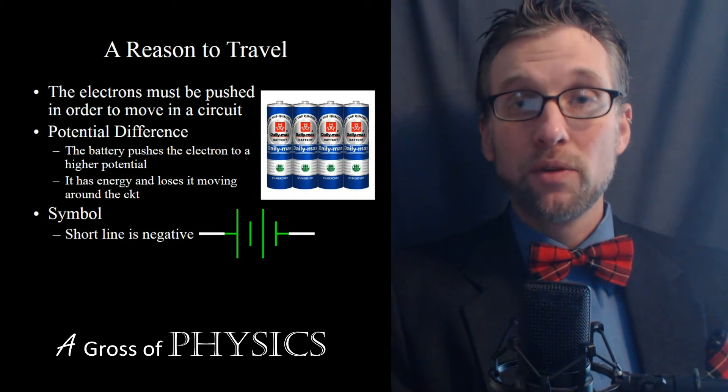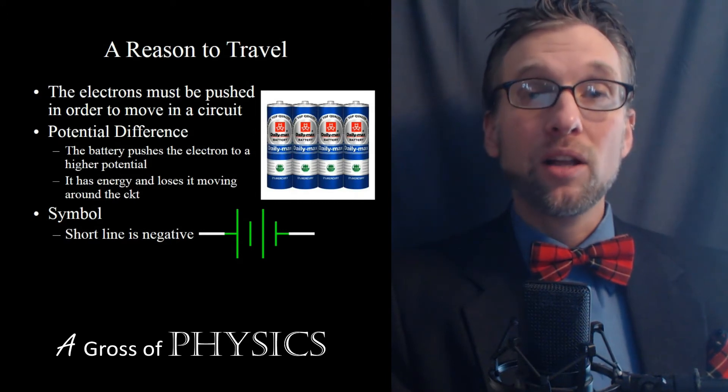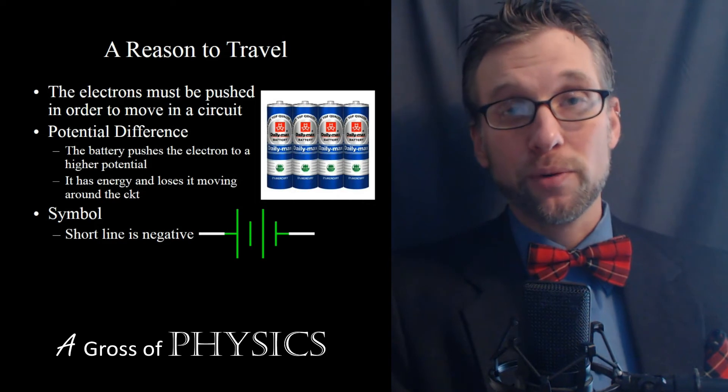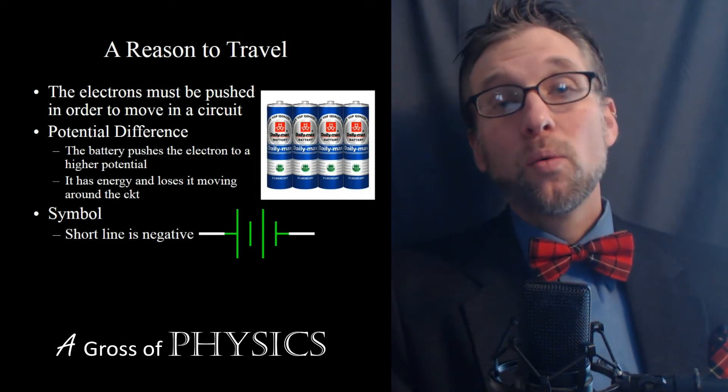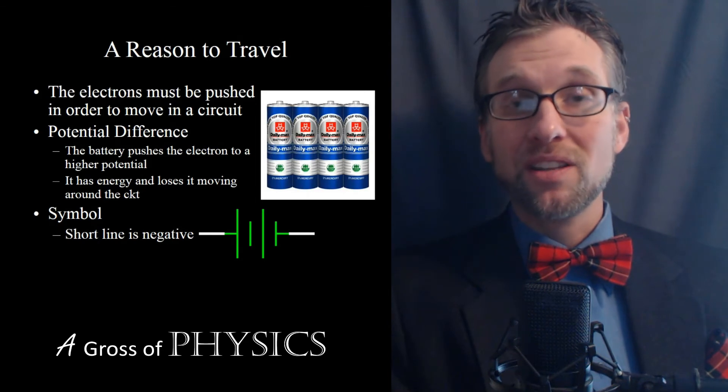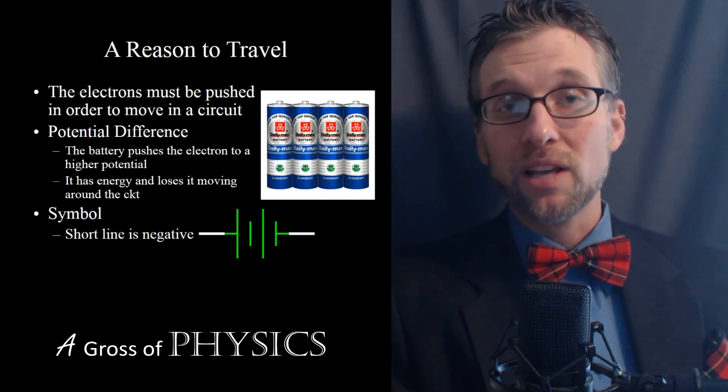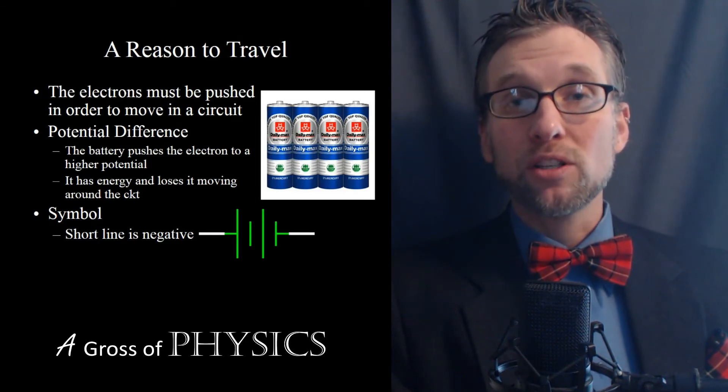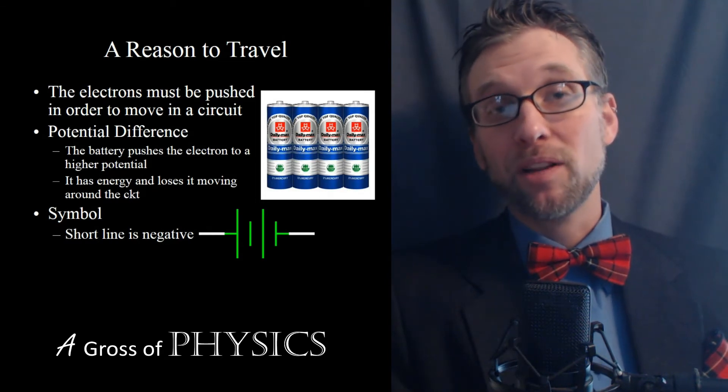Now the short line represents the negative terminal of the battery, and the long line represents the positive terminal of the battery. When we have that situation, you can remember the negative versus the positive, because the negative is small, so it looks like a negative sign. And the positive terminal is long, so you could break it in half and make a plus sign out of it.